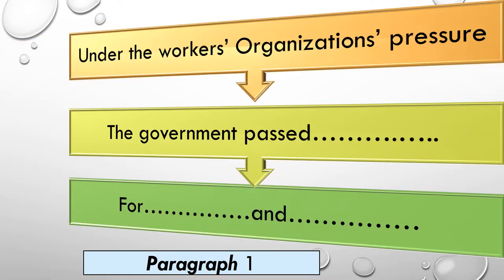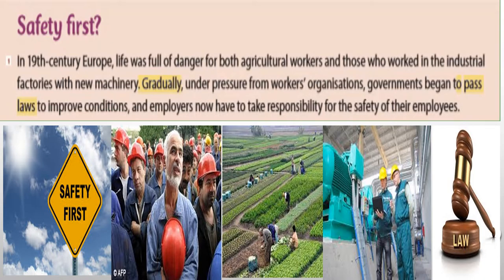Now I want you to read paragraph number 1 carefully to complete these sentences: Under the workers' organizations' pressure, the government passed — what? For whom? Let's start with the first paragraph. I want you to look at the pictures carefully. The second picture shows workers' organizations. The third picture shows agricultural workers. The fourth picture shows industrial workers, and the last picture shows the word 'law'.